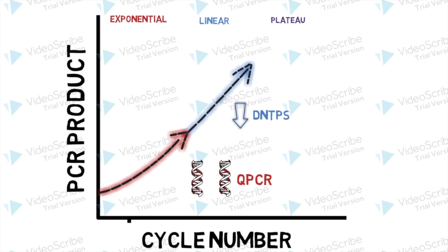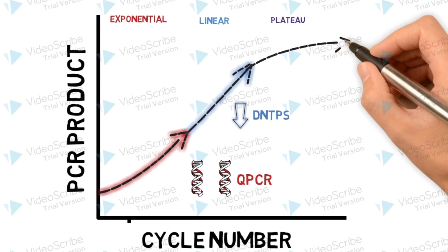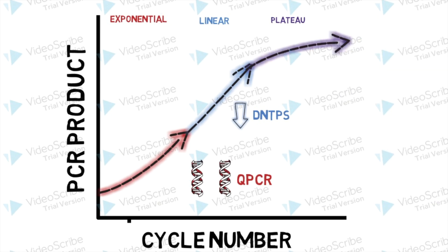If you're running multiple replicates, the depletion of key reagents can occur at different rates, ultimately resulting in different quantities of PCR products between samples at the plateau phase. The plateau region is where endpoint PCR takes measurements.